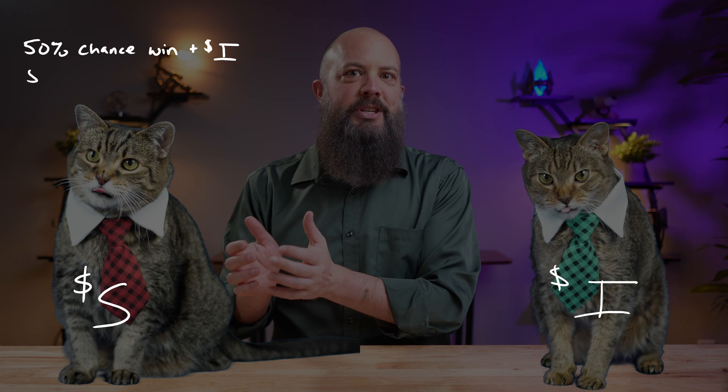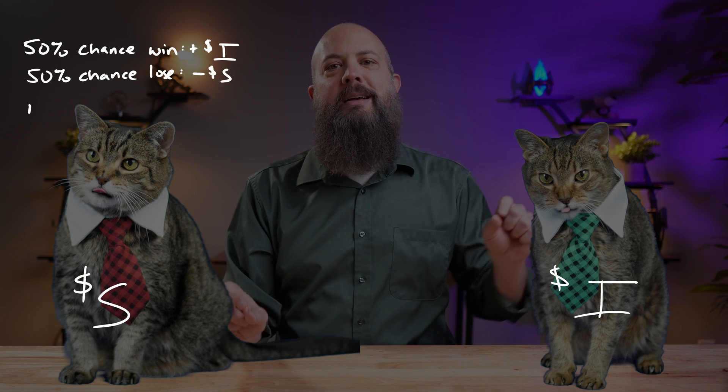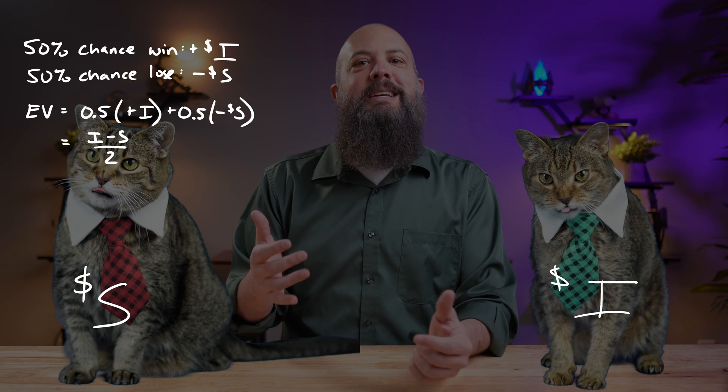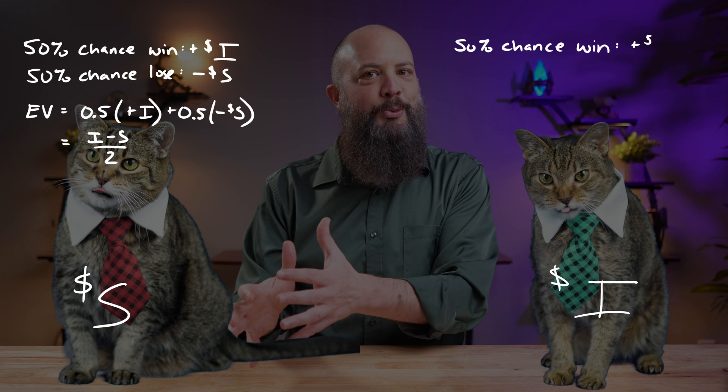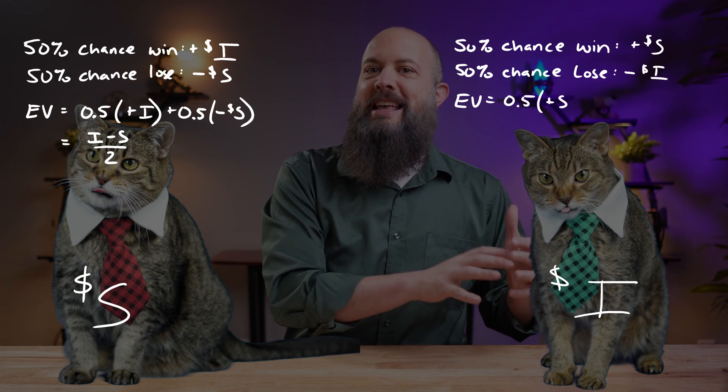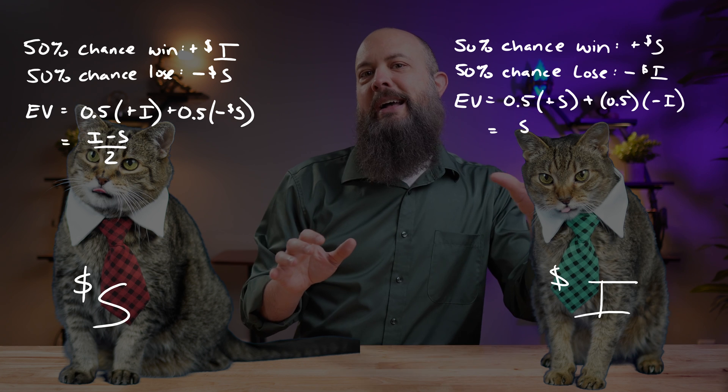The resolution is to recognize that there aren't three prices in this scenario, because the cats are only wearing two different ties. There should only be two numbers in the equation. So in this problem, it's actually easier to remain in terms of the variables themselves. Let's say Serenity's tie is S dollars and Indiana's tie is I dollars. Then from Serenity's perspective, she is risking losing S in order to win I.